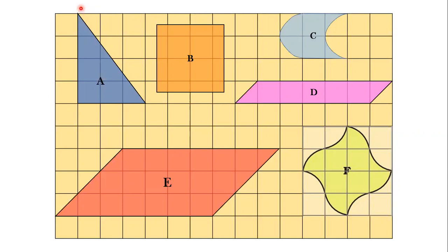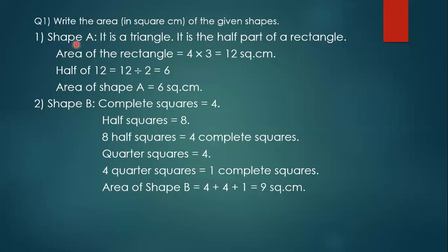And this triangle is half of the rectangle. So the area of shape A is half of 12. Half of 12 is 6. It is a triangle, so it is half part of the rectangle. Area of the rectangle is 12 square centimeters, and half of 12 is the area of shape A. So area of shape A is 6 square centimeters.